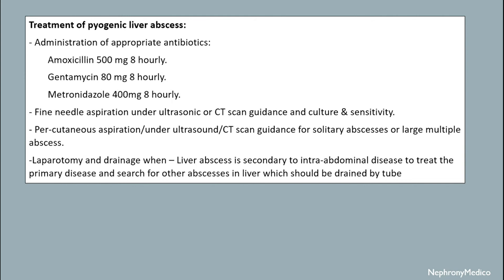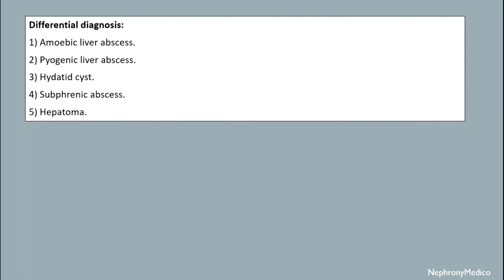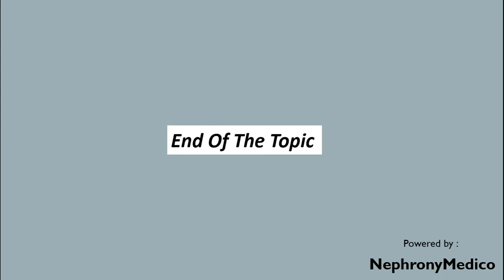Complications of pyogenic liver abscess include septicemia, septic shock, hepatic failure, rupture, peritonitis, and intrahepatic spread. Differential diagnosis includes amoebic liver abscess, pyogenic liver abscess, hydatid cyst, and hepatoma. End of the topic.